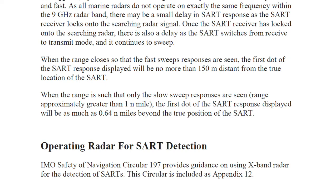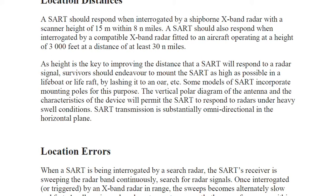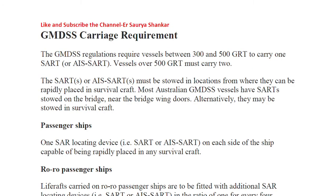Regarding GMDSS carriage requirements, the regulations require vessels between 300 and 500 gross tonnage to carry one SART. Vessels over 500 GRT must carry two SARTs. They must be stored at a location from where they can be rapidly deployed into the survivor craft.